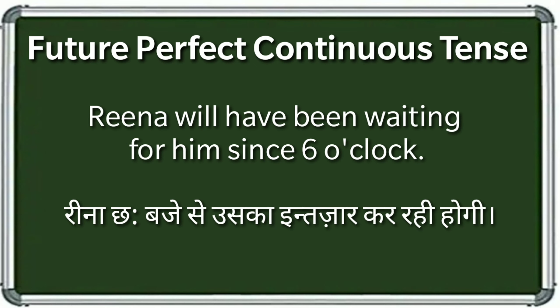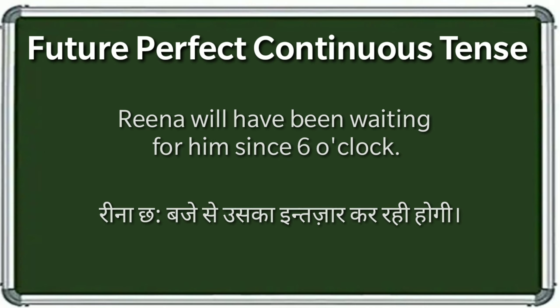दूसरा example: Rina 6 बजे से उसका इंतजार कर रही होगी — Rina will have been waiting for him since six o'clock. देखिए format में चीजें fit हुईं: Rina subject है, will have been auxiliary verb है, wait main verb थी V1 उसके साथ ing जोड़ा, और for him since six o'clock object और time reference है.